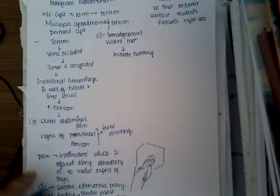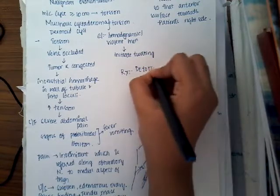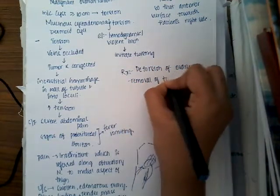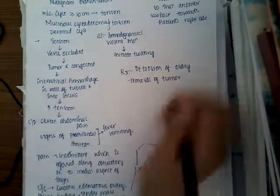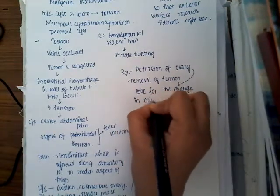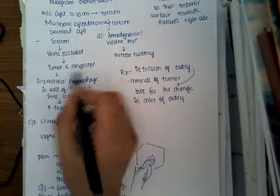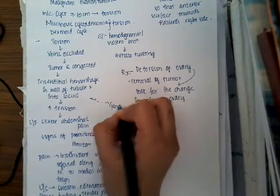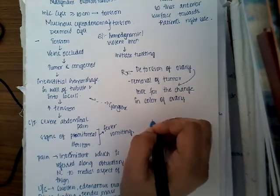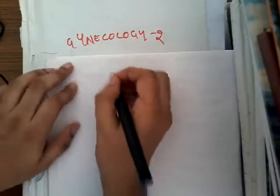The treatment involves detorsion of the ovary first, followed by removal of the tumor and the ovary that has undergone torsion. After detorsion, you will have to look for a change in color of the ovary, because torsion can cause color change or even gangrene formation due to the interstitial hemorrhage — which can slowly progress to gangrene.